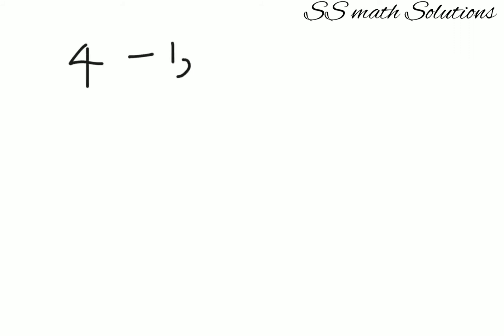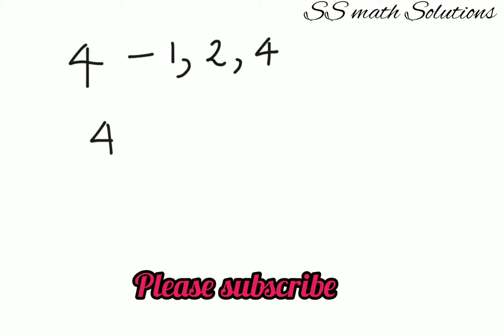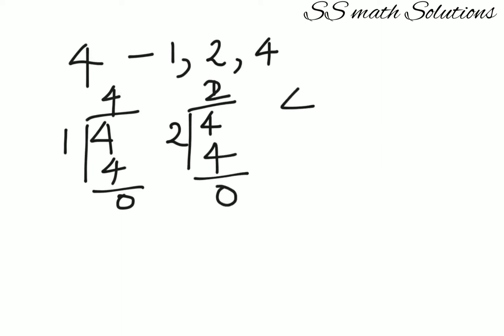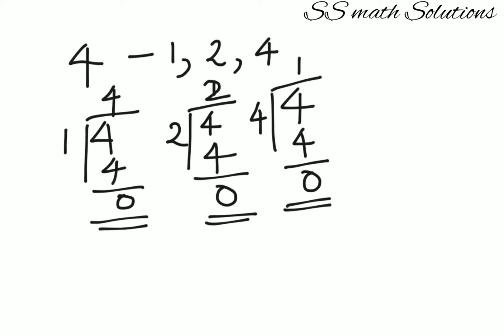Now for four: 4 divided by 1 — one into four is four, remainder zero. 4 divided by 2 — two twos are four, remainder zero. 4 divided by 4 — one into four is four, remainder zero. In all three cases we got zero as the remainder, so 1, 2, and 4 are the factors of 4.